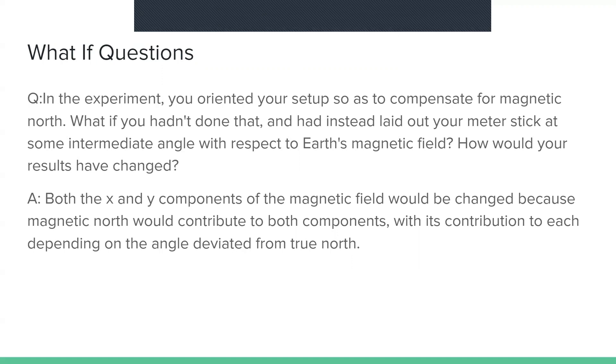Both the x and y components of the magnetic field would have changed because the magnetic north would contribute to both components, with its contribution to each depending on the angle deviated from true north.